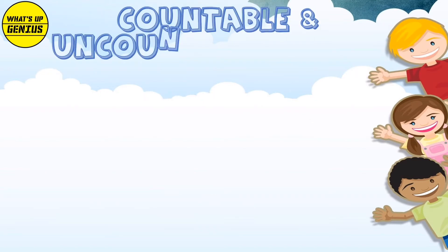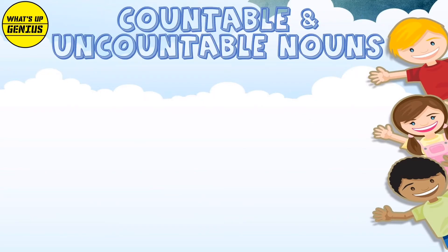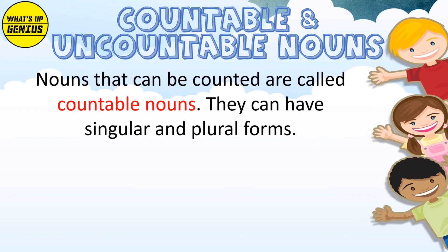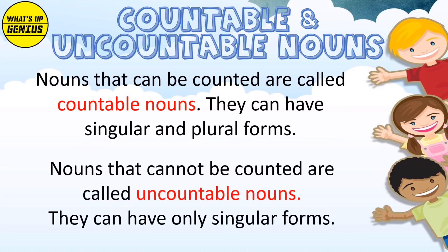Nouns that can be counted are called countable nouns. They can have singular and plural forms. Nouns that cannot be counted are uncountable nouns. They can have only singular forms.